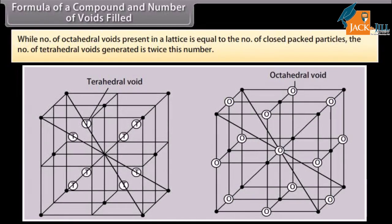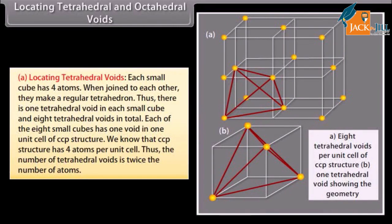The number of octahedral voids present in a lattice is equal to the number of close-packed particles, while the number of tetrahedral voids generated is twice this number. To locate tetrahedral voids: each small cube has four atoms; when joined they make a regular tetrahedron, giving one tetrahedral void per small cube and eight tetrahedral voids in total. Since the CCP structure has four atoms per unit cell, the number of tetrahedral voids is twice the number of atoms.